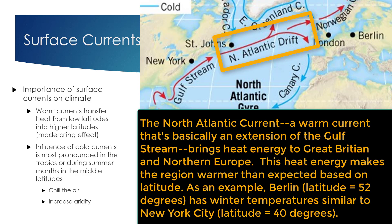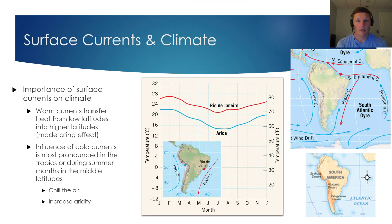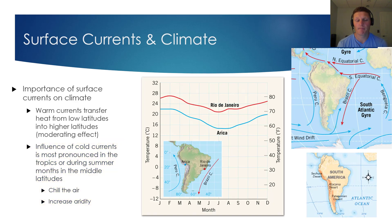In fact, Northern Europe's latitude is fairly close to Alaska's latitude. Cold currents also have a significant impact on Earth's climates, and the influence of cold currents is most pronounced in the tropics or during the summer months in the mid-latitude regions.